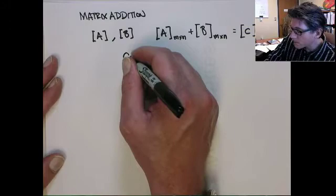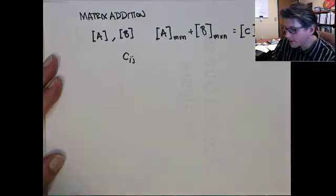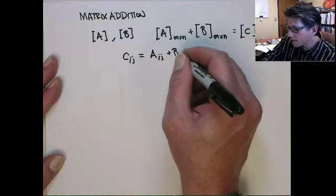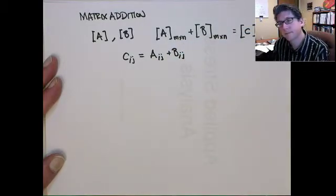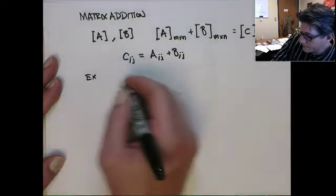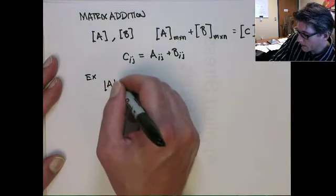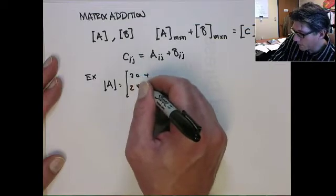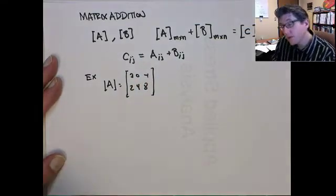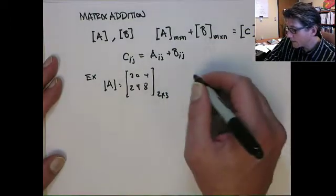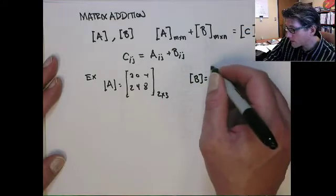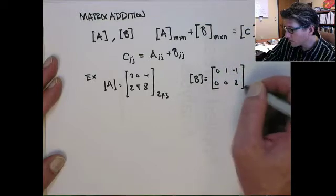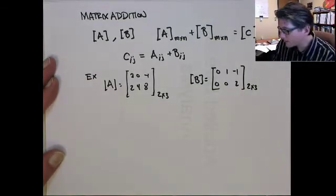So, the ij entity in C is simply going to be aij plus bij. So, for example, if A were to equal 3, 0, minus 1, 2, 4, 8, this is a 2 by 3, B has to also be a 2 by 3, 0, 1, minus 1, 0, 0, 2. That's also a 2 by 3. So, we can add them together to get the matrix C.